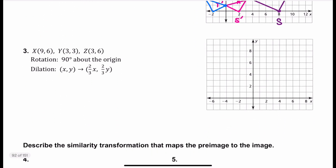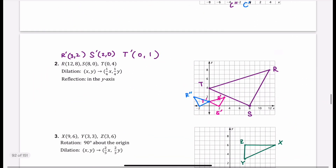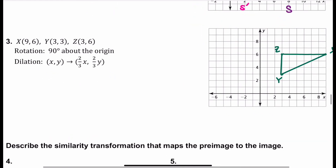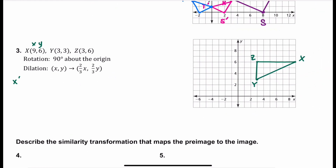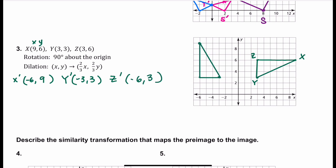Now in example 3, we're going to rotate the triangle XYZ 90 degrees about the origin. The formula for a 90 degree counterclockwise rotation is: negative y, x. So for X prime: y is 6, giving us negative 6, and x is 9. For Y prime: negative 3, 3. And for Z prime: negative y is negative 6. As you can see, it's the same triangle — just rotated 90 degrees.